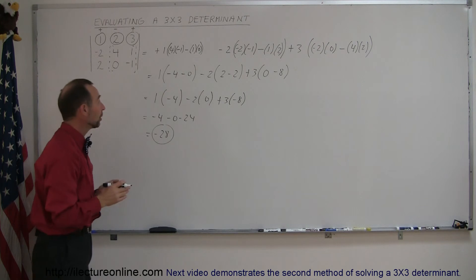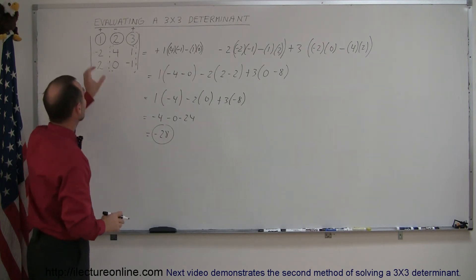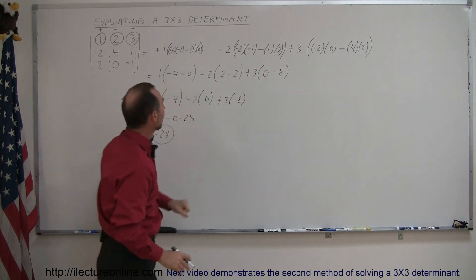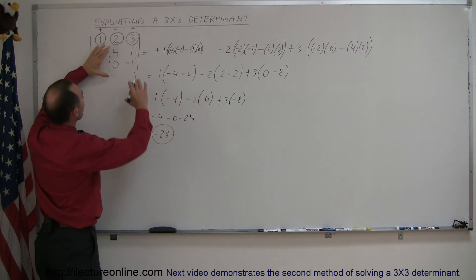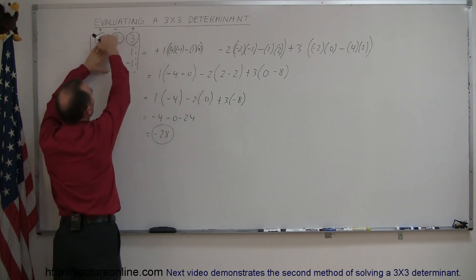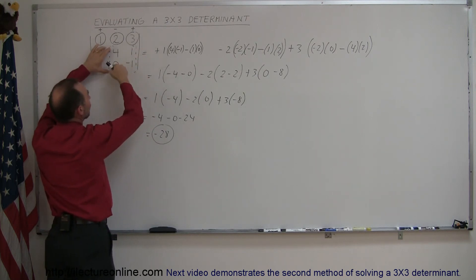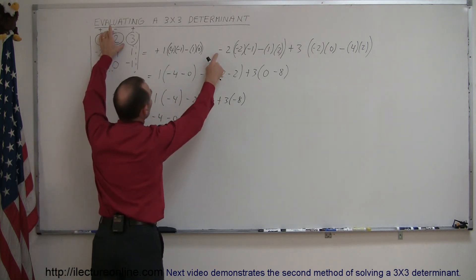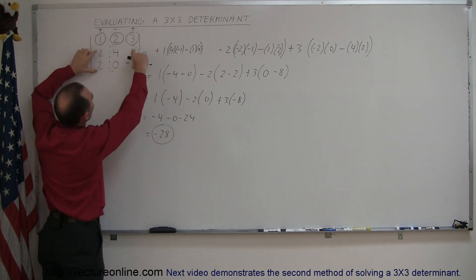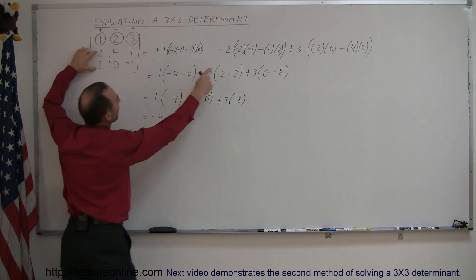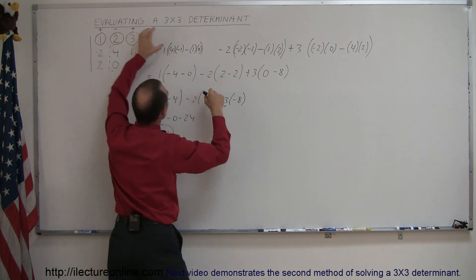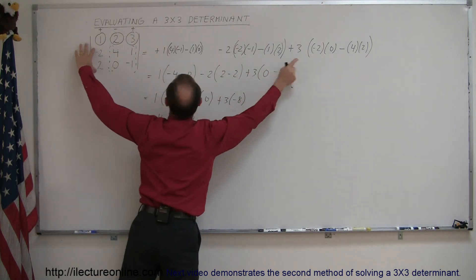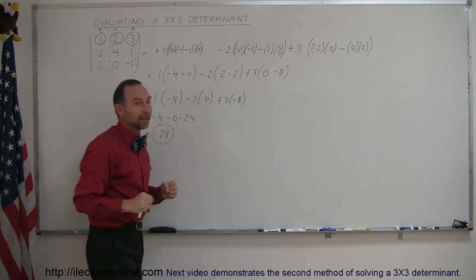So when someone asks you to evaluate a determinant, this is one of the ways you can do it. To recap: take each of the three top elements, put them out to the side, and alternate the signs in front of them — plus, minus, plus. Then block out the row and the column where that element is located, leaving four other elements. Multiply the product of the diagonal going one way, minus the product of the diagonal going the other way. For the first element: four times negative one, minus one times zero. For the second element with a negative sign: negative two times negative one, minus one times two. For the third element: negative two times zero, minus four times two. Then simply evaluate it. That's one method.